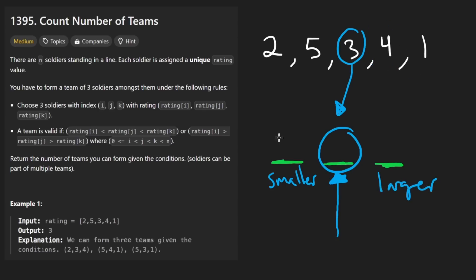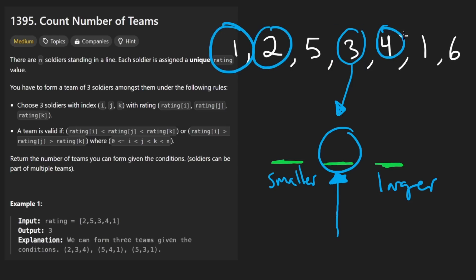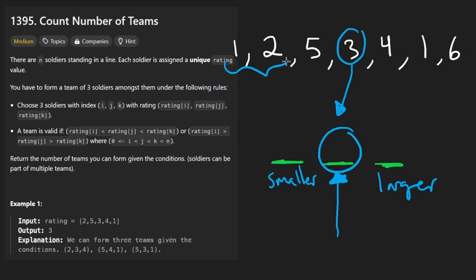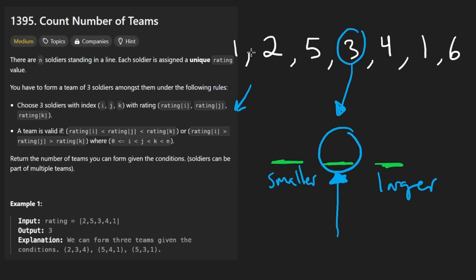We're not going to sum these two values — we're actually going to multiply them. Because suppose we had a one and a two on the left, and a six on the right: two elements on the left smaller than three, two elements on the right greater than three. We're picking combinations — one of two choices on the left, one of two choices on the right — so we take the product. You'd realize it from the decision tree. So the result is left_smaller × right_larger for counting ascending triplets.